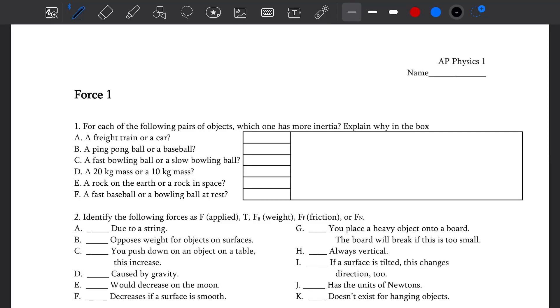For each of the following pairs of objects, which has more inertia? Explain why in the box. First, we have to know inertia is mass. Mass is inertia. Inertia is a reluctance to accelerate. The larger mass, the more reluctant it is to accelerate. So if inertia is mass, an object with mass has inertia. The more mass means more inertia.